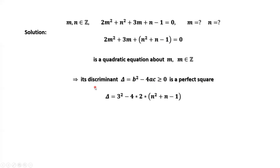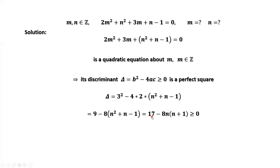We derive delta. Delta = 3² - 4 × 2 × (n² + n - 1). Simplifying, we get delta = 17 - 8 × n × (n + 1). Delta must be greater than or equal to 0 and a perfect square.